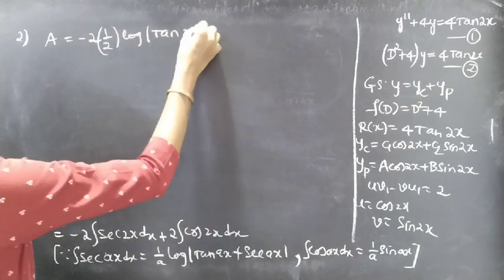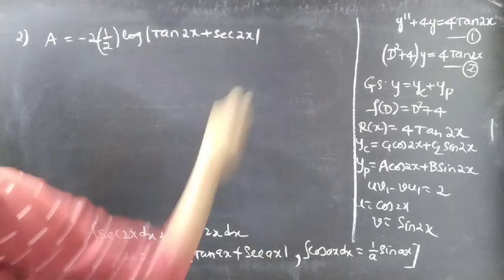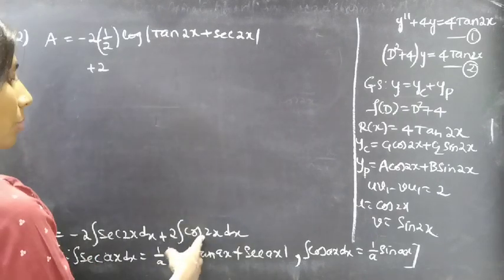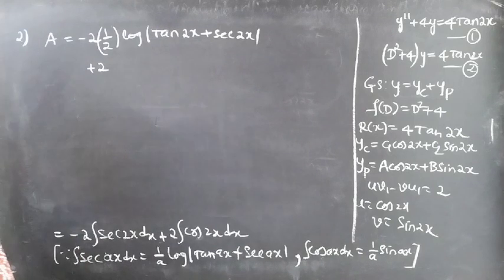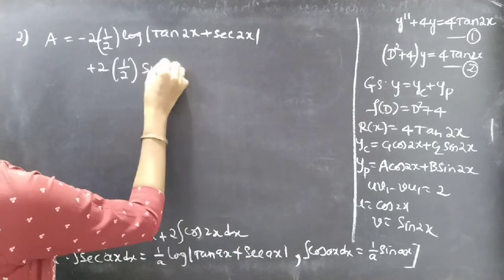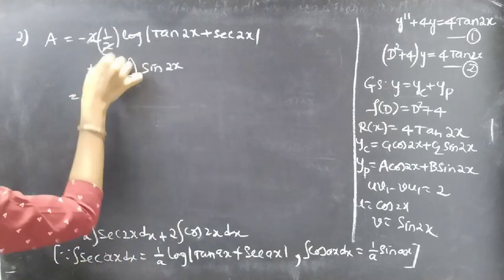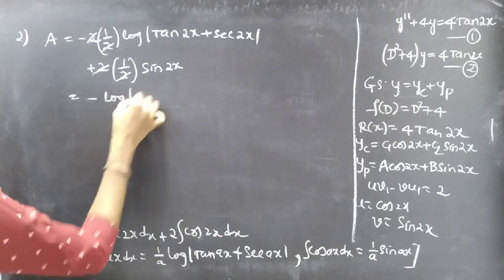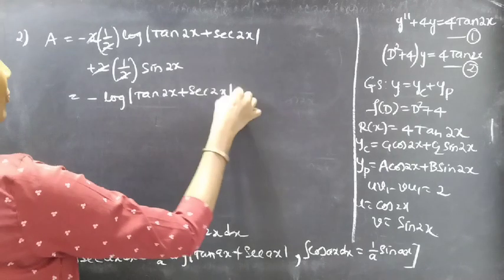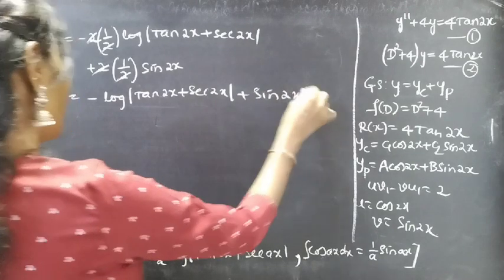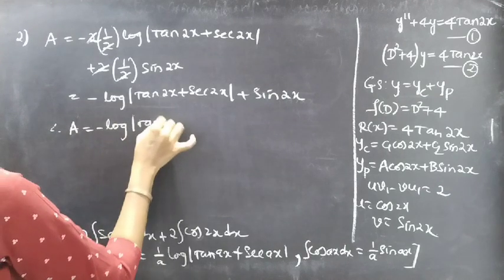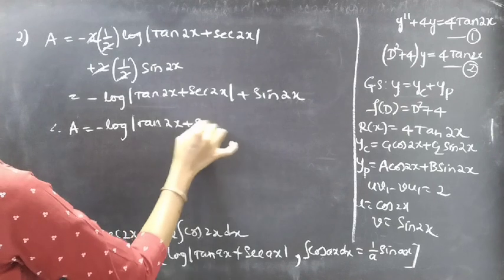Applying the formulas: a = −2 · (1/2) ln|tan(2x) + sec(2x)| + 2 · (1/2) sin(2x). The 2s cancel, giving a = −ln|tan(2x) + sec(2x)| + sin(2x). Therefore a = −ln|tan(2x) + sec(2x)| + sin(2x).